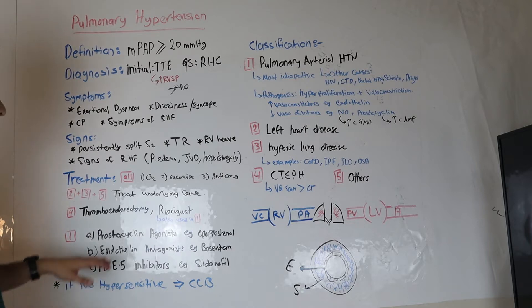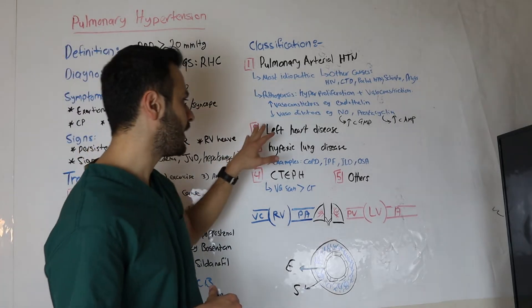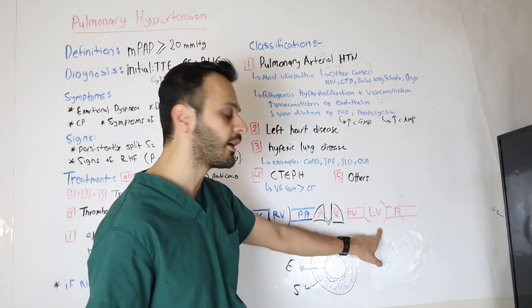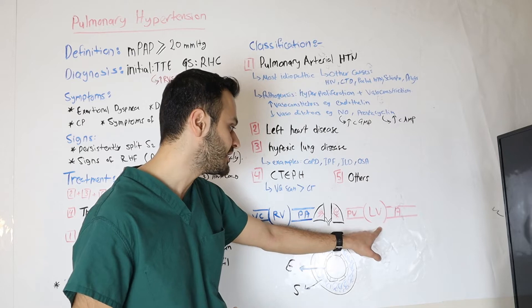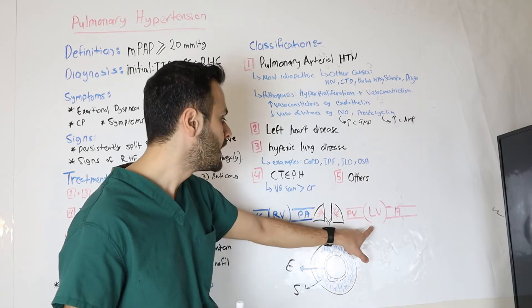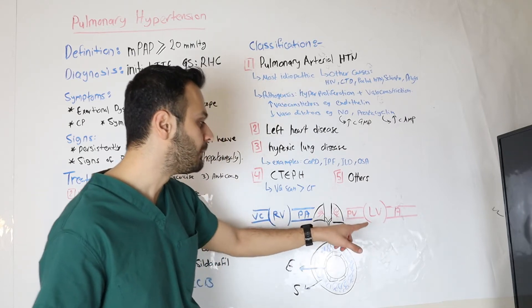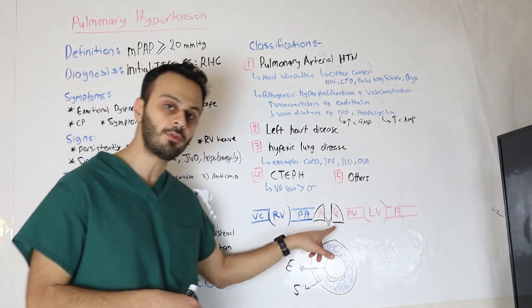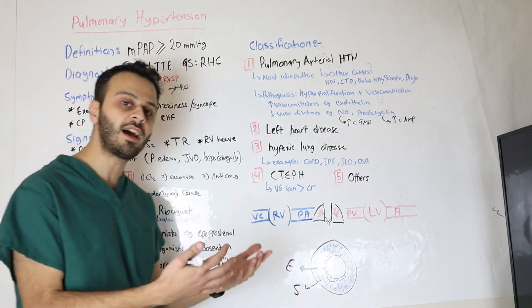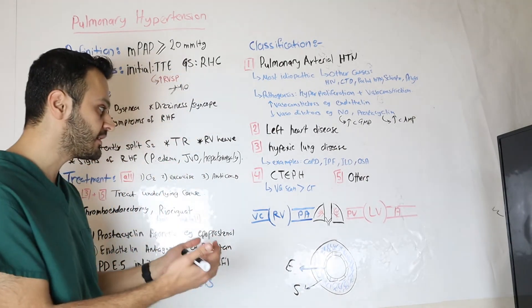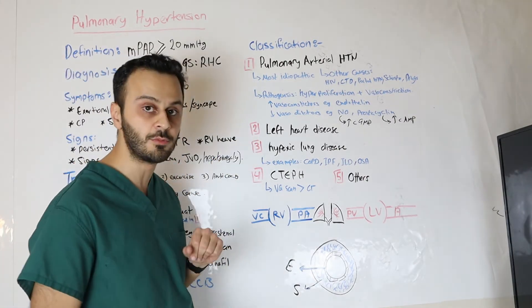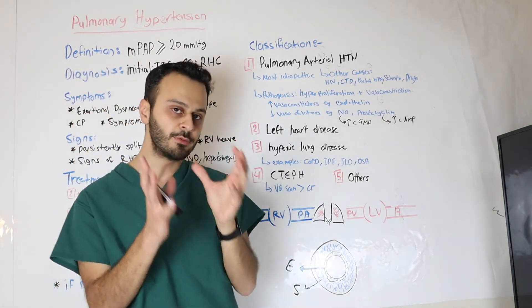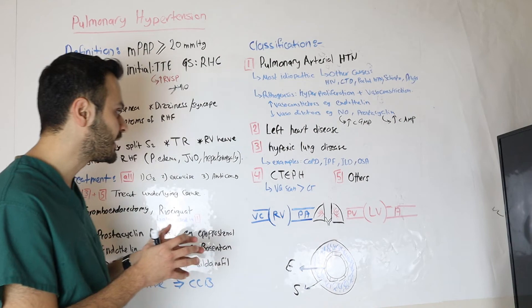Moving on from class one, talking about the other classes. Class two is if you have an issue with the left heart. Basically, if you have a left heart disease, such as heart failure, then the blood will back up from the left ventricle into the lung and leads to significant pulmonary congestion. Over time, this congestion will lead to an increase in the pressure and thus class two pulmonary hypertension. The way I like to remember it is that the heart has two ventricles, so I would classify that as class two.